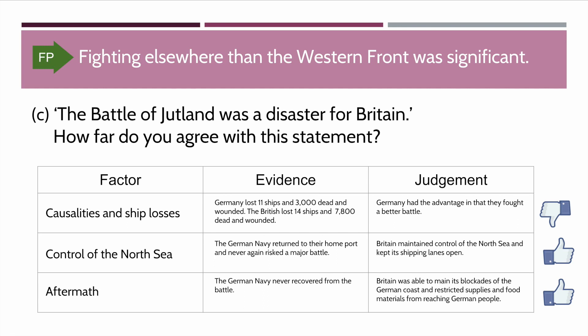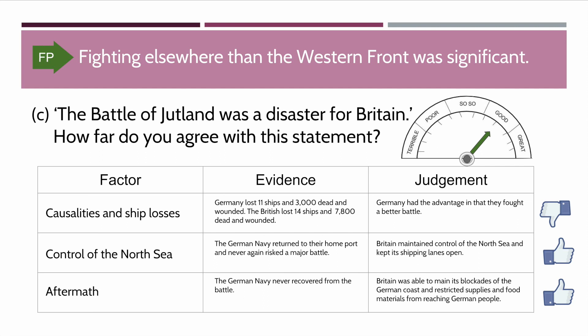So based on our three factors, we have one negative against the British and two positive. Where would we fall on our measurement? Somewhere around 'good.' It's not terrible for the British, it wasn't poor, but it certainly wasn't great either. Any response which falls somewhere between so-so and good is probably appropriate, if you can back it up with the evidence we've talked about.